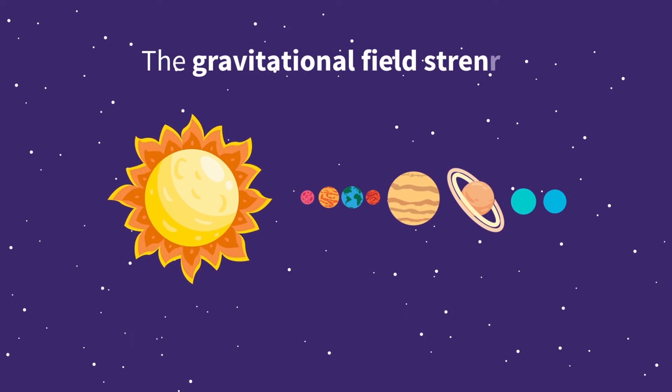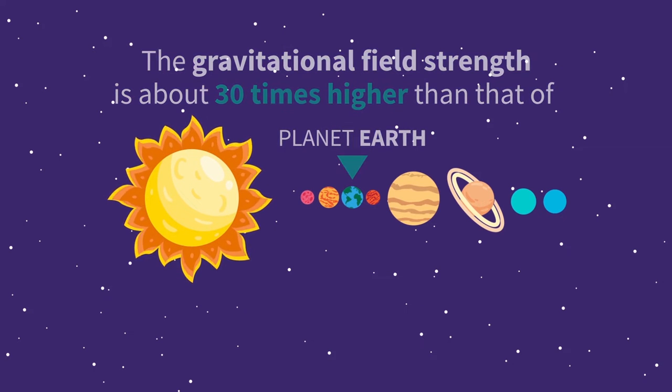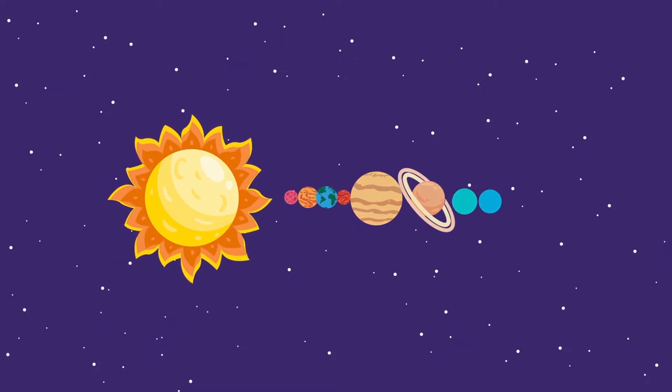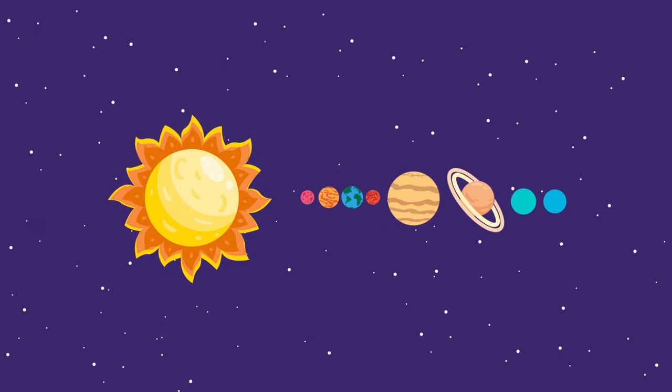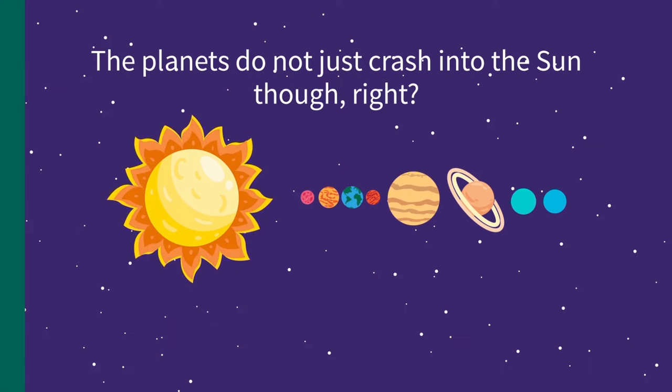This gravitational field strength is about 30 times higher than that of the planet Earth. Can you imagine? This implies that it is capable of pulling everything and anything into it. But wait a minute! The planets do not just crash into the Sun though, right? Why is that?